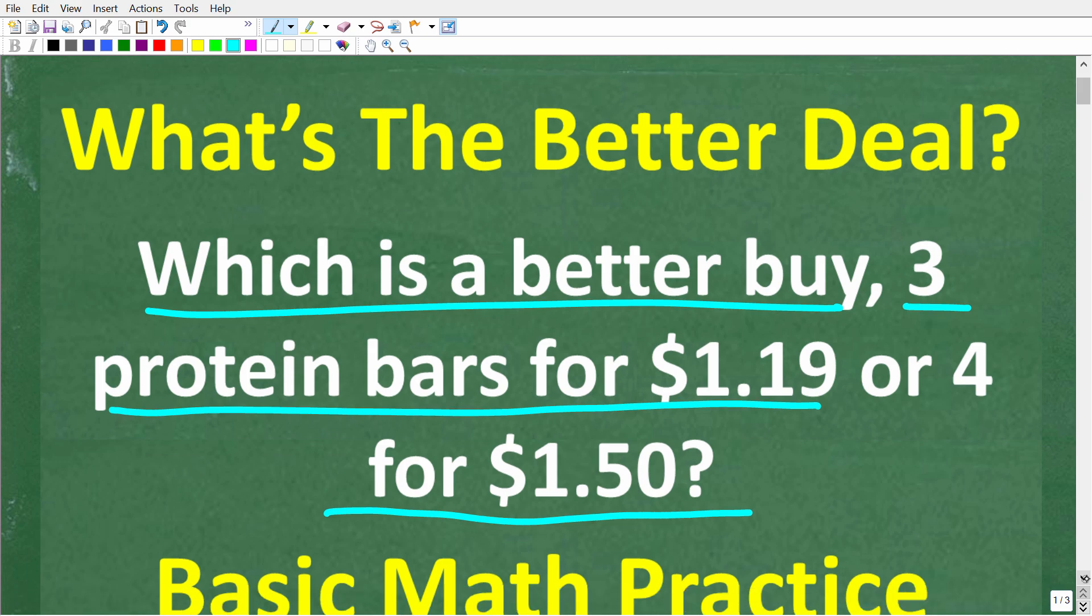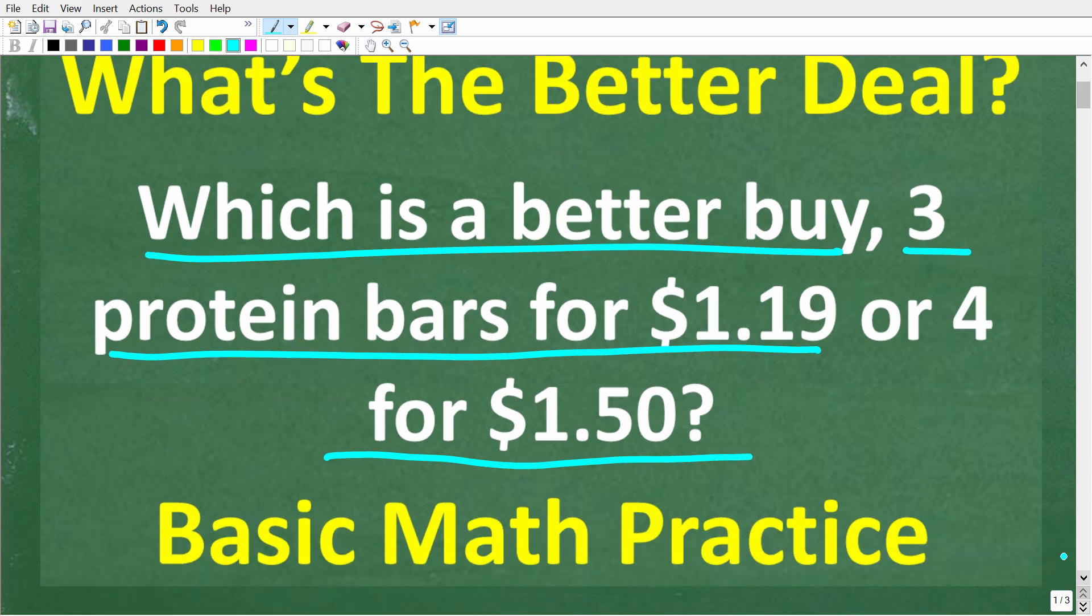So one more time, we have basically what you would see at the store. In other words, there's all kinds of deals going on. So which is a better buy? We can get three protein bars for $1.19, or if we spend $1.50, we can get four.